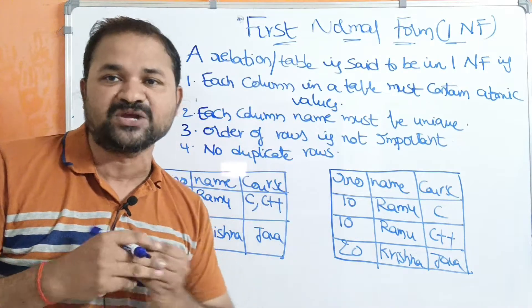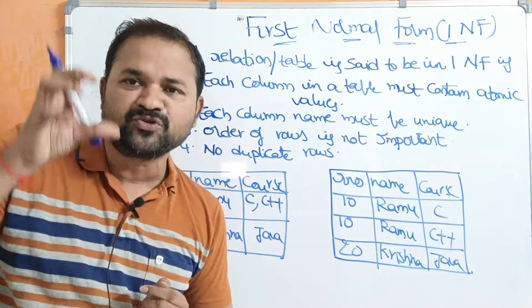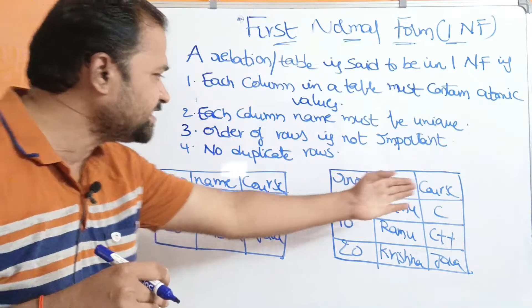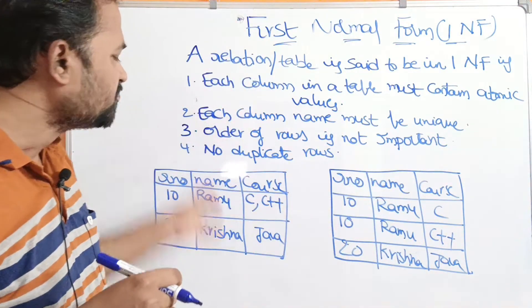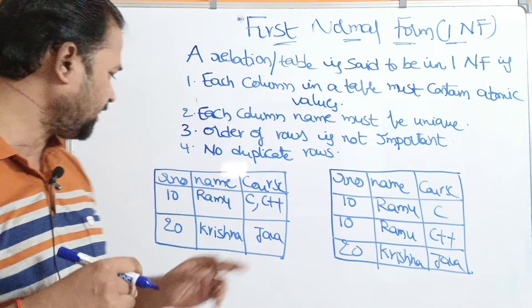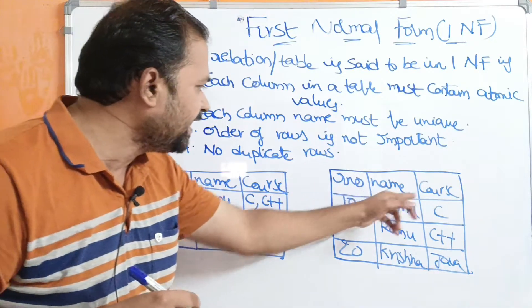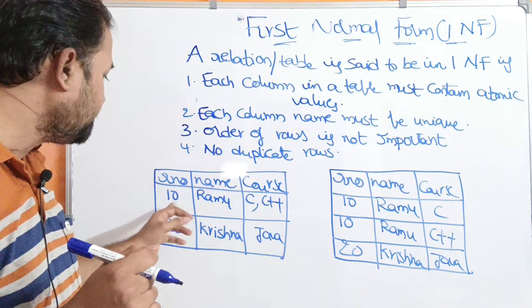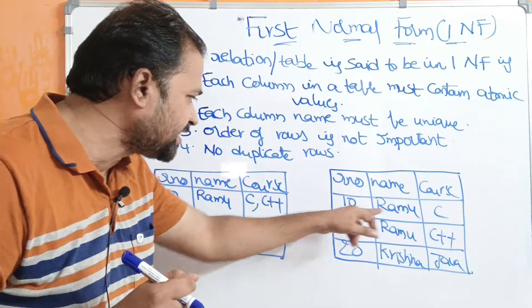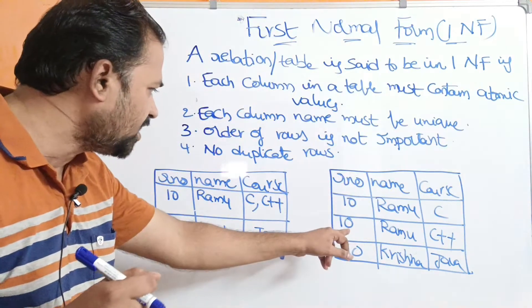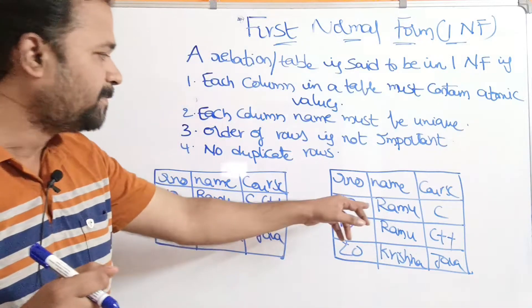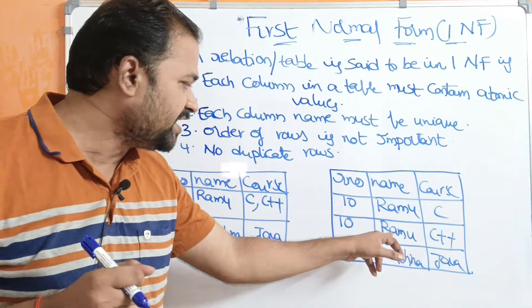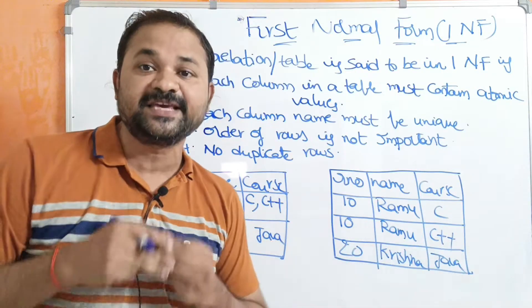This cell contains two values. In this situation, we have to split the record into two records. After applying the first normal form, this is the output table. Roll number, name, and course are the column names. Here we are splitting this record into two records. Roll number and name remain the same — roll number is 10, name is Ramu — for both records. But in the first record, Ramu registered for course C, and in the second record, Ramu registered for C++ course.